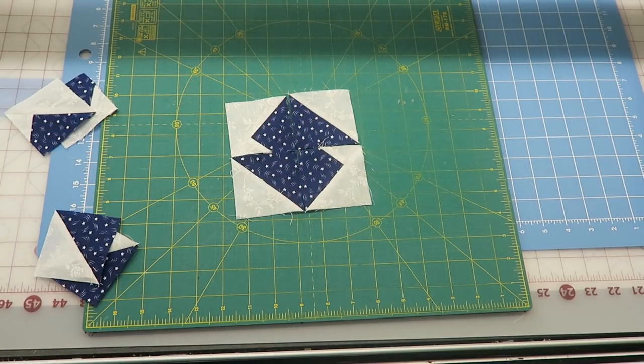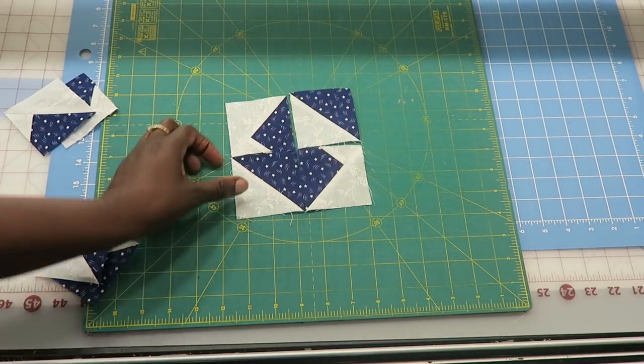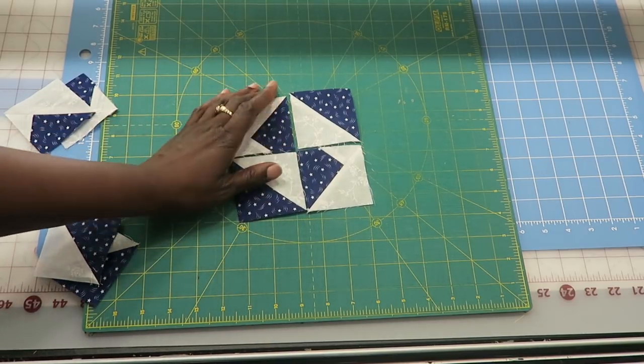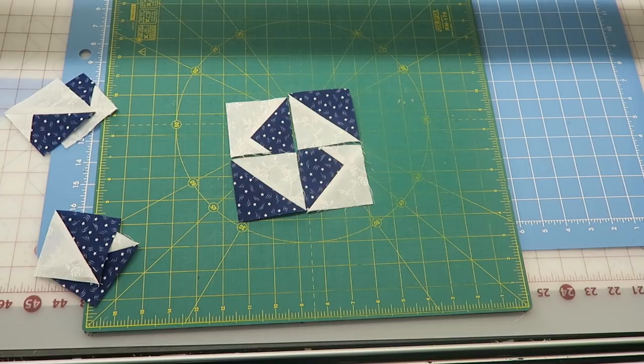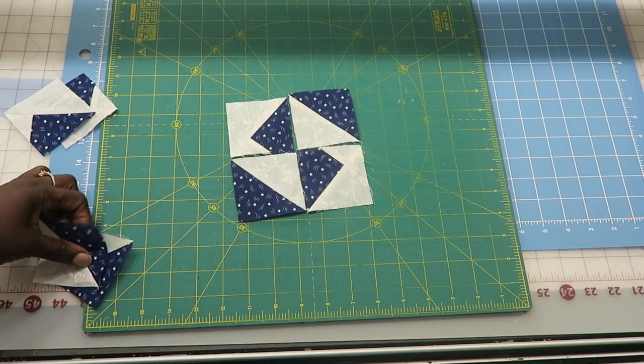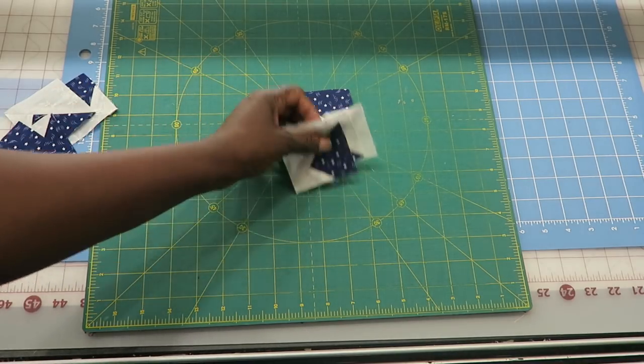You can also rotate your lights in and end up with a little different block. So it just depends on how you want to use these extra units. If you're making a lot of blocks, you're going to have a lot of extra units left over, so that may be something you might want to consider.